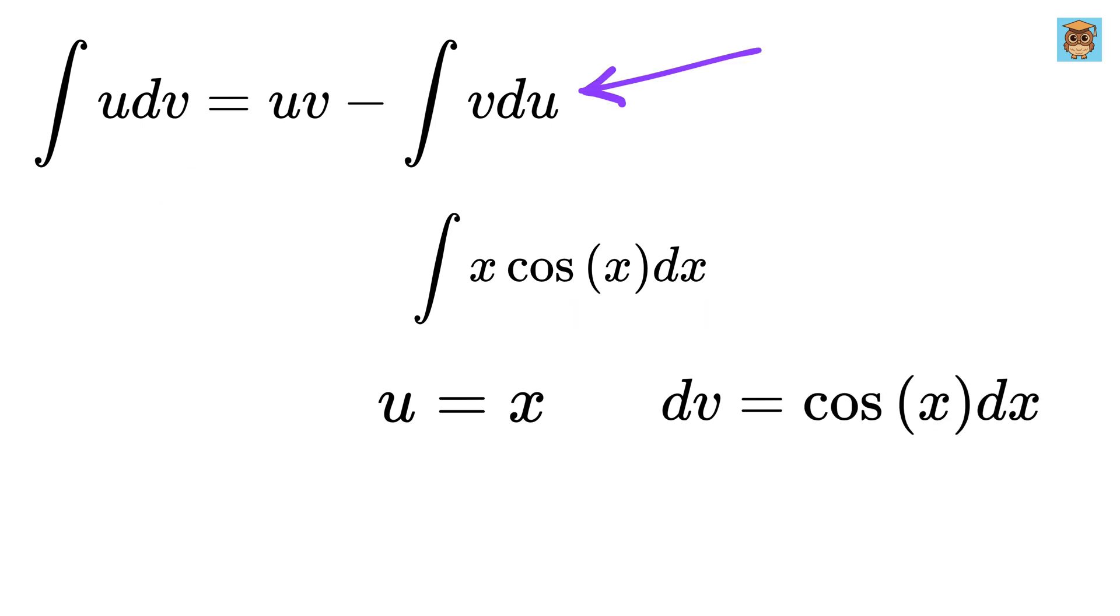Now we want du, so the derivative of u with respect to x will be 1 and thus du equals dx. Now to get this v, integrate dv or integrate cosine x times dx and we get sine x.